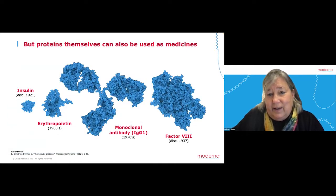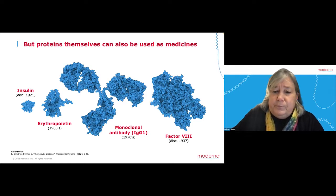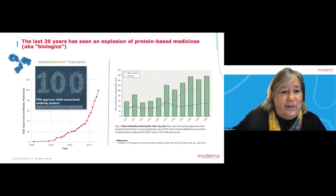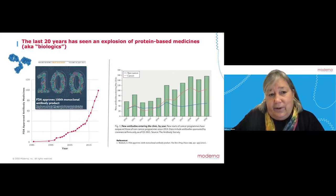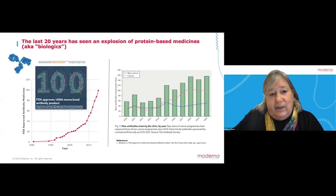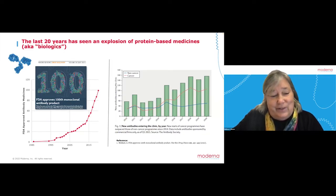Over time, many proteins have been used as medicines. Earlier this year, Nature published an article noting that the FDA had approved the hundredth monoclonal antibody as a medicine. Monoclonal antibodies have become really important medicines to fight disease. The number of new antibodies entering the clinic every year has grown dramatically — in 2020, 160 monoclonal antibodies entered the clinic in that single year, showing how important these have become.